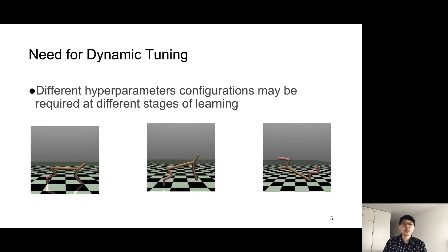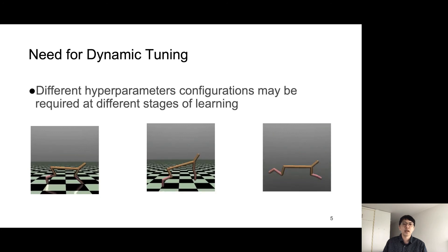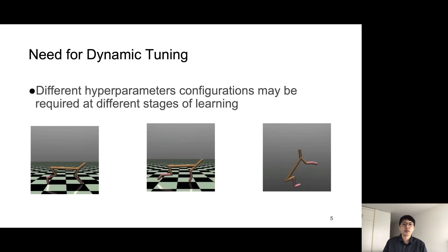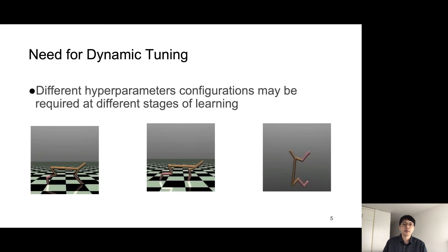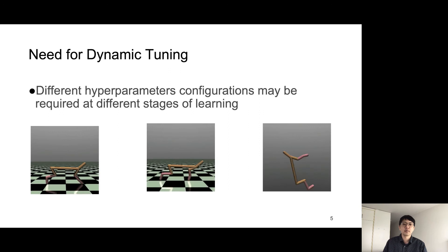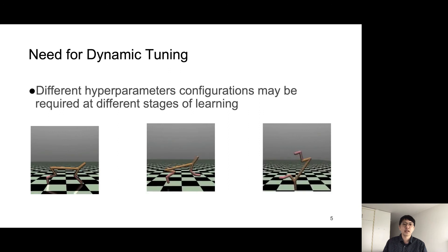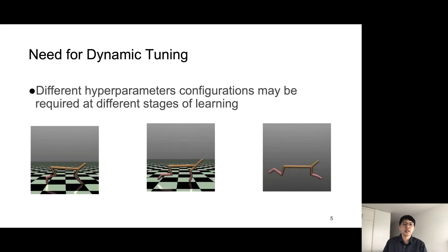Let's first take a look at the non-stationarity part. For many RL tasks, the policy that we learn will change across the whole training. Therefore, in different stages of one task, we might need different hyperparameter configurations. For example, as shown in the half-cheetah environment, we see that the half-cheetah evolves over time, from standing to running, and finally it learns to spin.